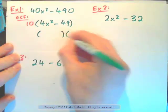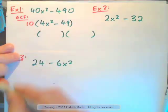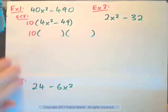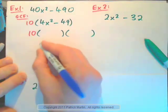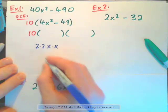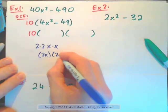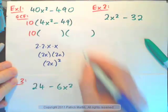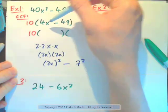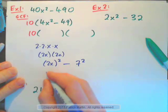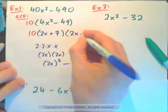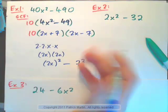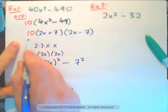We pull out the greatest common factor and we have the expression 4X squared minus 49 inside, which looks like a difference of squares, so we should factor it. The 10 stays outside. Now 4X squared is 2X all squared, and 49 is 7 squared. So 2X all squared minus 7 squared factors as 2X plus 7 times 2X minus 7. The final answer is 10 times 2X plus 7 times 2X minus 7.